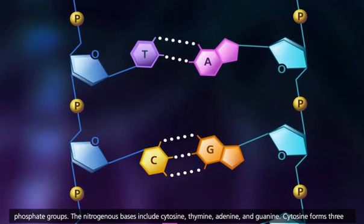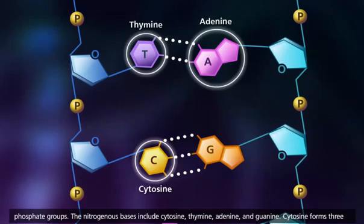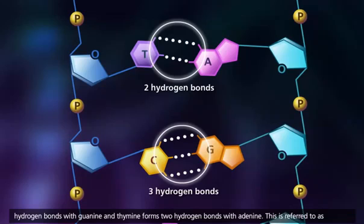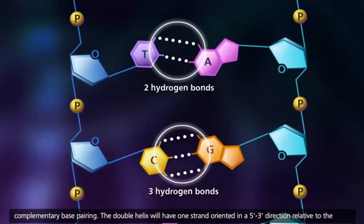The nitrogenous bases include cytosine, thymine, adenine, and guanine. Cytosine forms three hydrogen bonds with guanine, and thymine forms two hydrogen bonds with adenine. This is referred to as complementary base pairing.